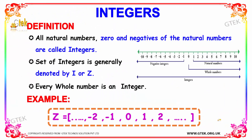Now let's move on to the next concept: integers. Integers include natural numbers, zero, and negatives of the natural numbers. Integers are classified as whole numbers, natural numbers, and negative integers. The set of integers is generally denoted by the letter I or Z.